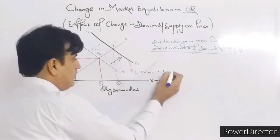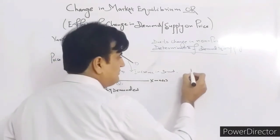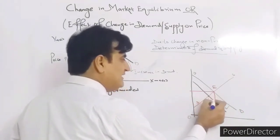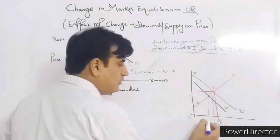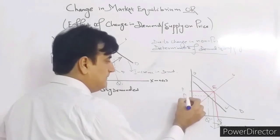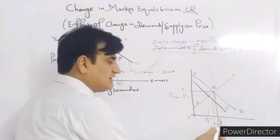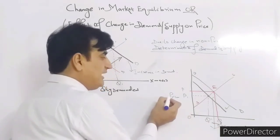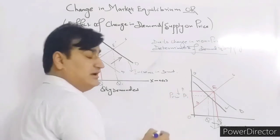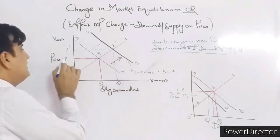This is called an increase in demand or a shift in demand. Now we will see what happens when the demand curve shifts leftward. Due to the demand curve shifting leftward, the quantity demanded decreases from OQ to OQ double dash, and as a result the new equilibrium price falls from OP to OP1. So when demand decreases, the quantity demanded declines and the price decreases.